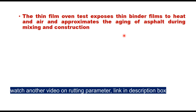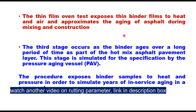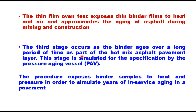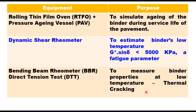The binder after short-term aging is used to determine the maximum temperature of the PG system, as explained in an earlier video. The third stage occurs as the binder ages over a long period of time as part of the hot mixed asphalt pavement layer. This stage is simulated by the pressure aging vessel (PAV), which exposes binder samples to heat and pressure to simulate years of in-service aging. Rolling thin film oven test coupled with PAV simulates aging during the service life of the pavement.